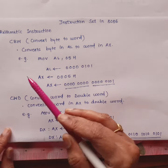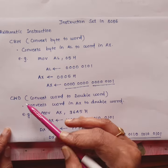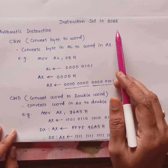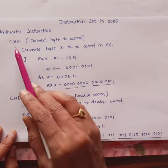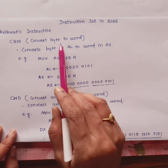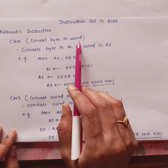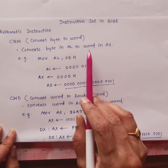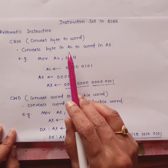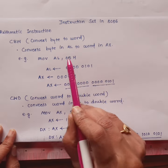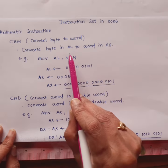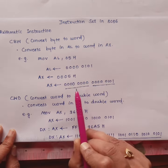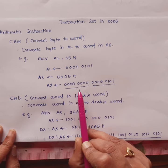Let us see CBW and CWD instructions from the instruction set of 8086. CBW stands for Convert Byte to Word. It converts a byte to a word by copying the MSB from the AL register to the AH register, which acts as a sign extension.